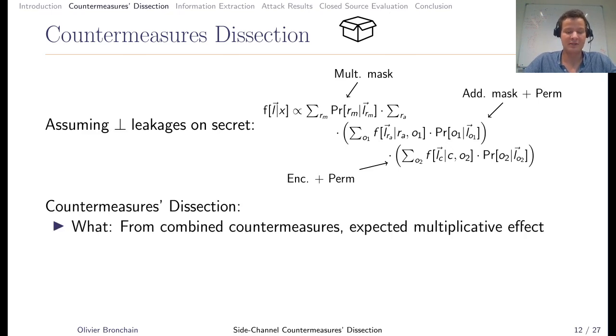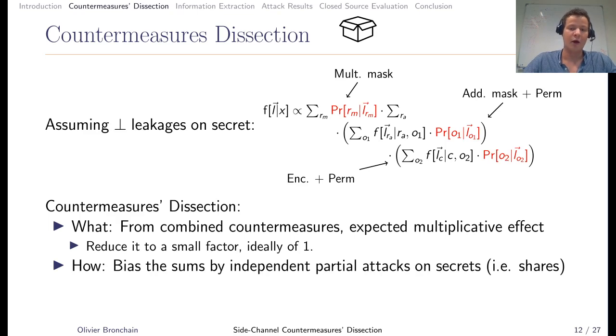When you want to combine countermeasures, you hope there will be a multiplicative effect between them. As an example, if you do masking plus shuffling, you hope that information on a share will be degraded because you do shuffling and then masking will be more effective. The goal of countermeasure dissection is to reduce that to a small factor, ideally close to one, meaning the two countermeasures are completely not combined.